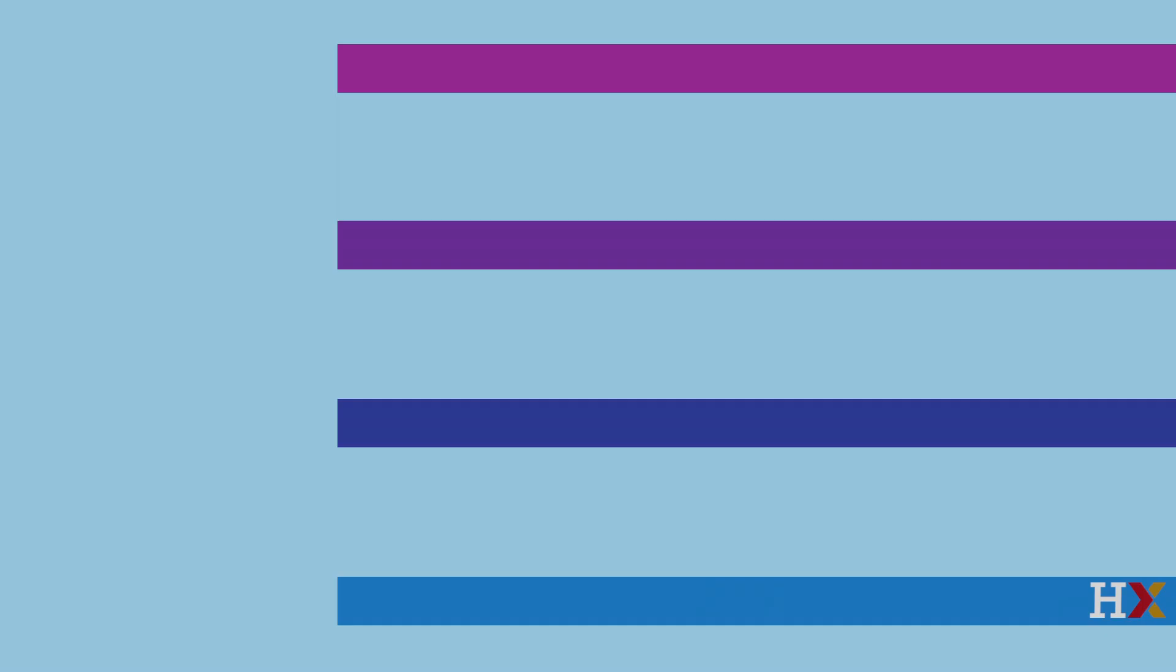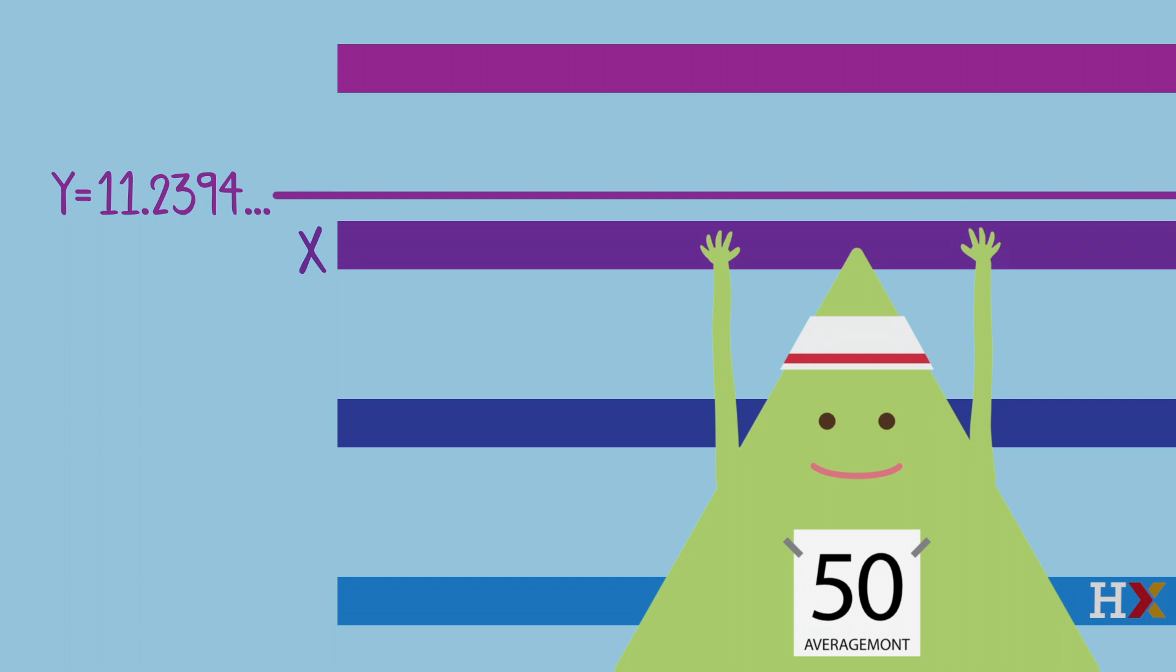John has set the new world record in X-barring. We can also think about the expected value of a continuous random variable through an X-barring example. Let Y be the highest point John reaches on a jump. We can think of X as a discretized version of Y. For example, just now John reached 11.2394 dot dot dot, and then he grabbed onto bar 11.